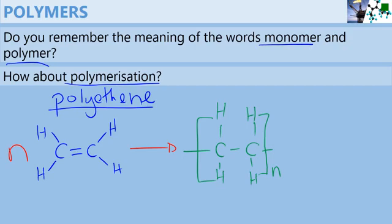Here, one of the ethene molecules is called the monomer. So a monomer is a unit molecule or a small molecule that combines with other molecules or other monomers to form a polymer.